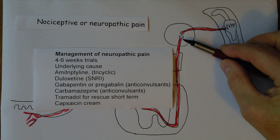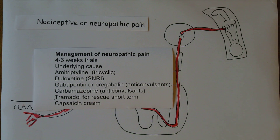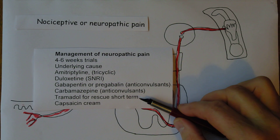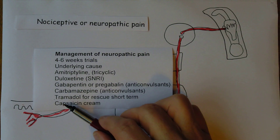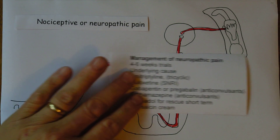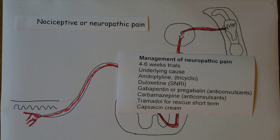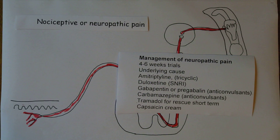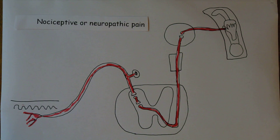Tramadol also affects neurotransmitters, making it good for managing acute neuropathic pain. As an opiate, we don't want to give it for too long, but it can be used for rescue therapy because of its double effect — an opiate effect plus neurotransmitter modulation. A newer treatment is capsaicin cream, applied to the surface of the painful area. It diffuses through the skin and affects substance P, which influences nerve activity. Capsaicin is what's found in chilli peppers — it's why your mouth goes numb. We use a very low concentration: 0.075% cream.